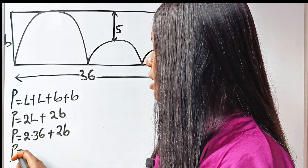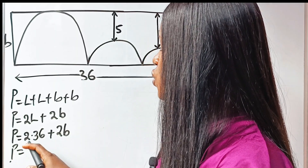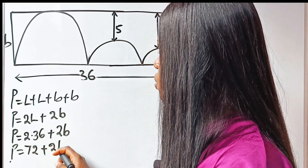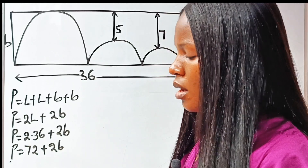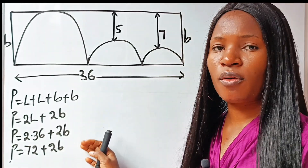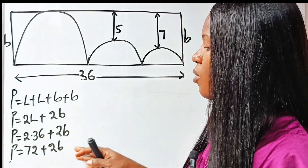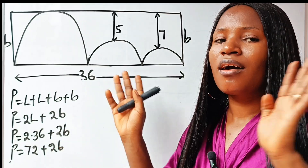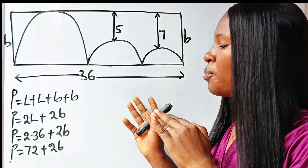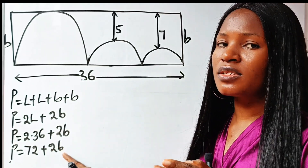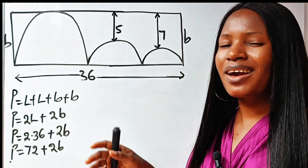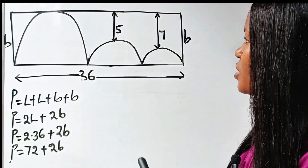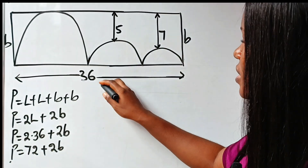The perimeter simplifies to 72 plus 2B. It's very obvious that what is preventing us from getting the perimeter of this shape is the breadth. So if we can get the breadth, then we are done.